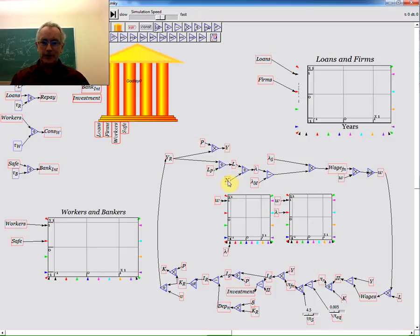Notice I've got population here just as a constant. If I right-click, I can choose Add Integral, and that creates an integral block to it.